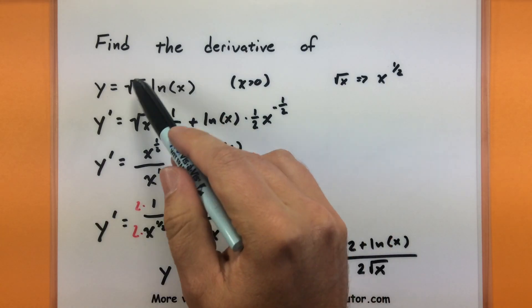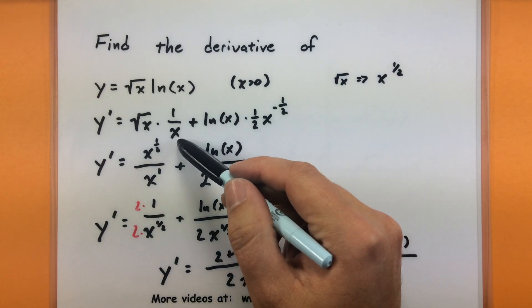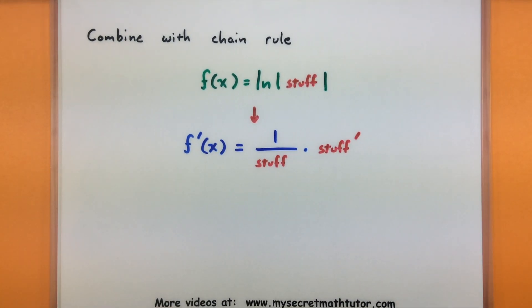So the key is really knowing what do I do when I need to take the derivative of that natural log. And you can see we're just putting in that 1 over x that is its derivative. Now the fun part about this rule is you can combine it with your chain rule in case you have something a little bit more complicated on the inside.